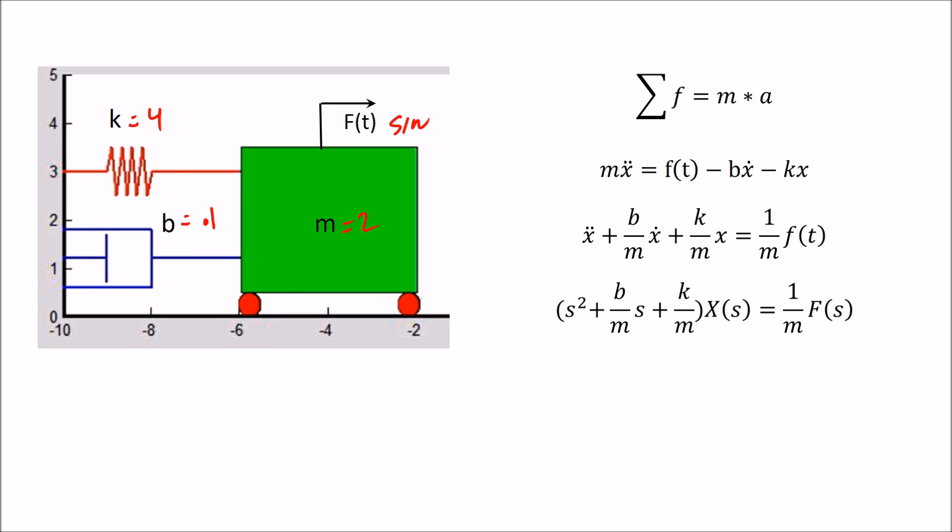You can do the Laplace transform of this if you recall. The Laplace transform of the second derivative of x is s squared times X(s). The second derivative... the derivative of x dot is s times X(s), and we have that constant b over m, and we're ignoring initial conditions since we're headed for a transfer function. The transform of x is just X(s), and we have F(s) as our transform for the force. Arrange that to say that my output X(s) as a function of the force F(s), or our input F(s) is our transfer function.